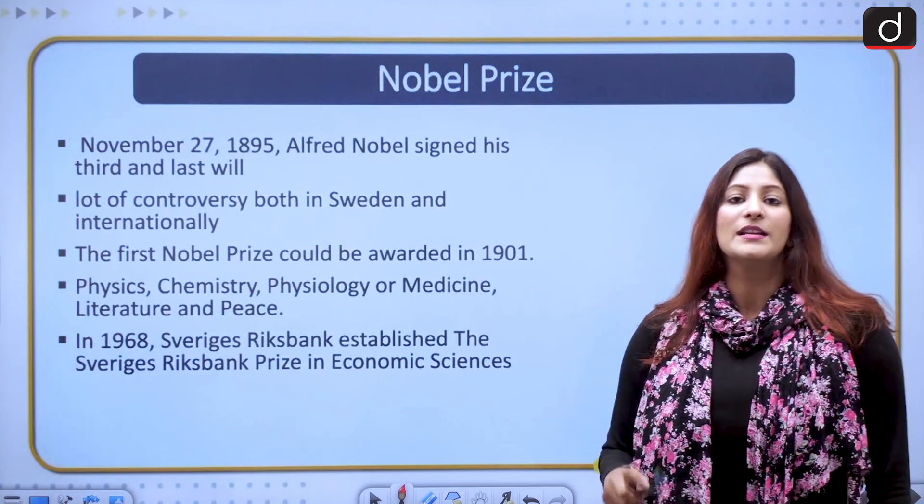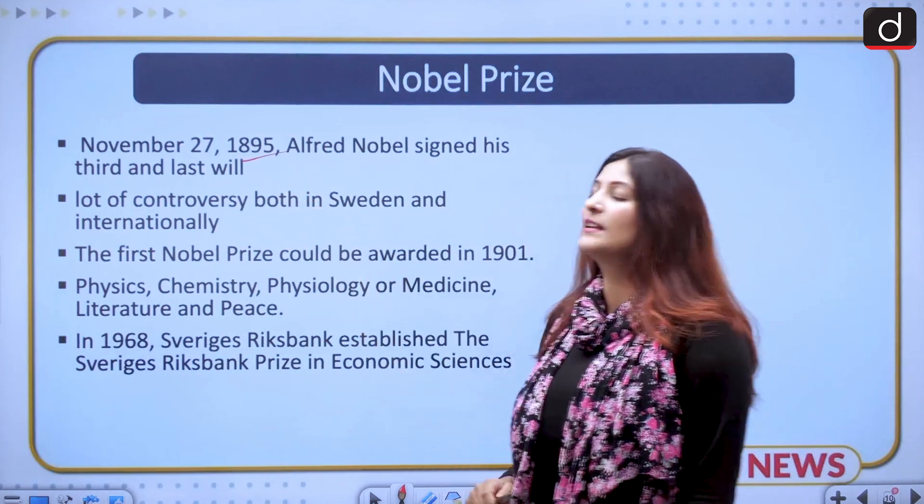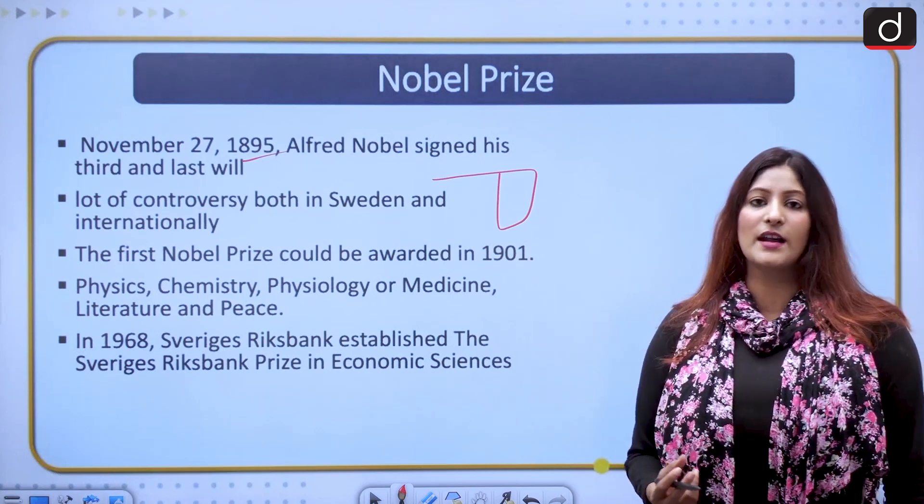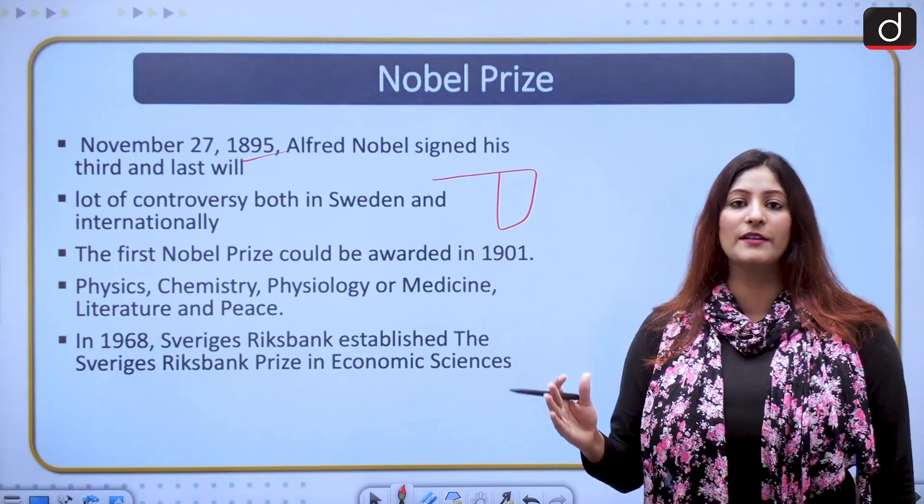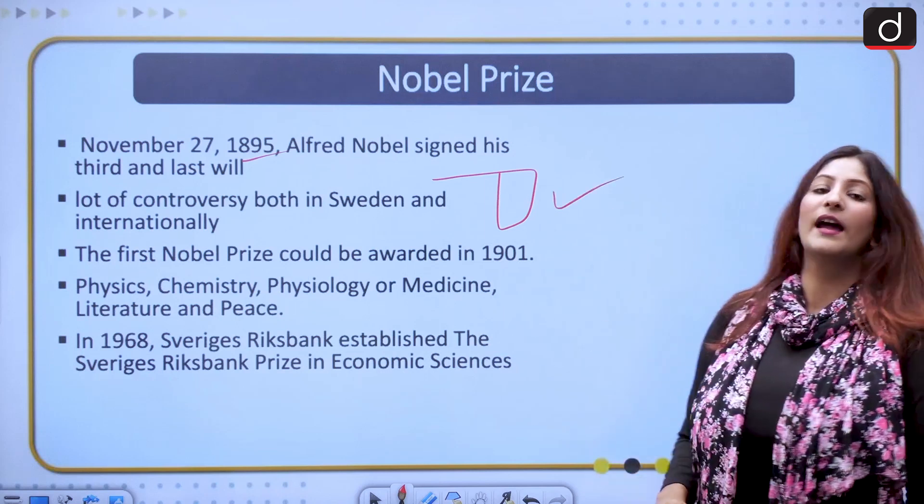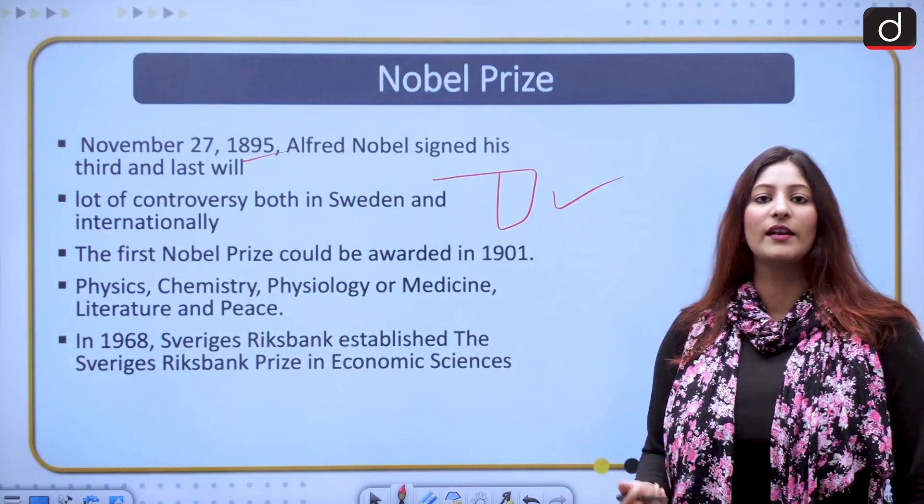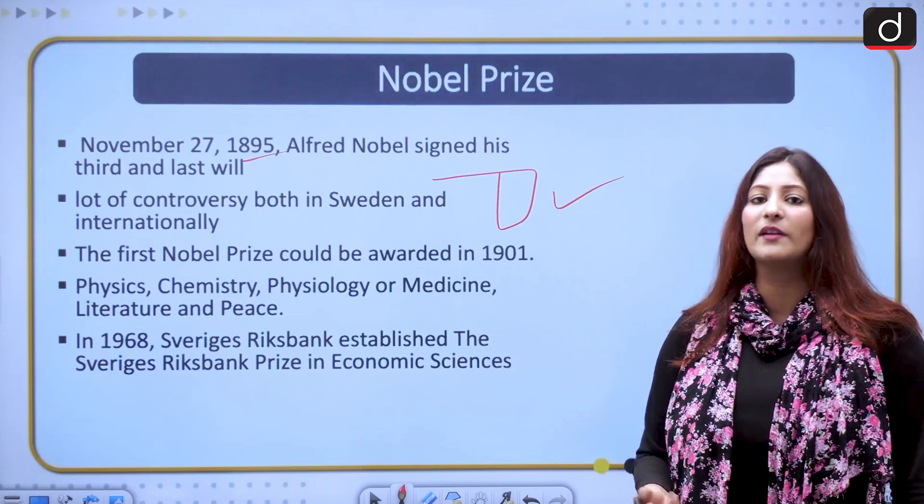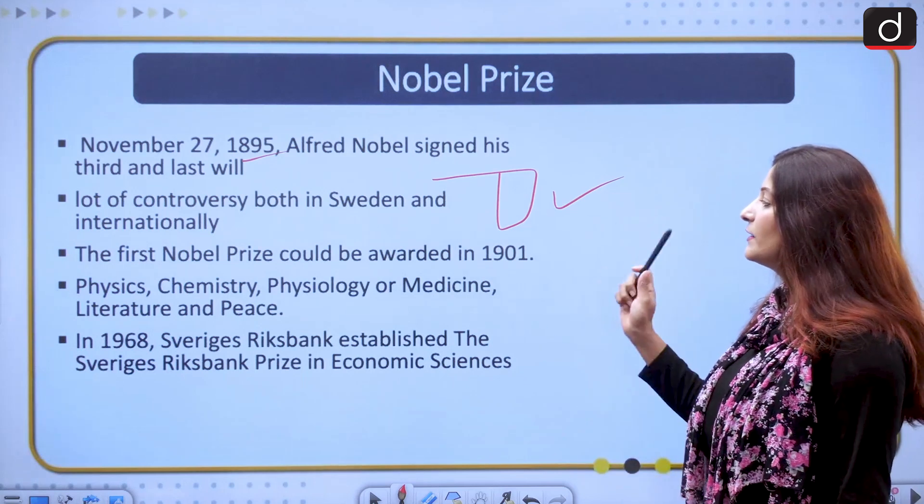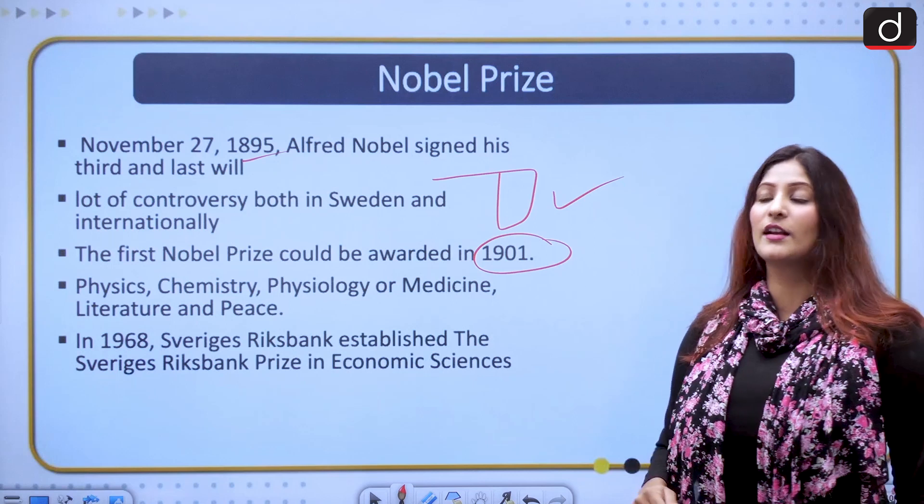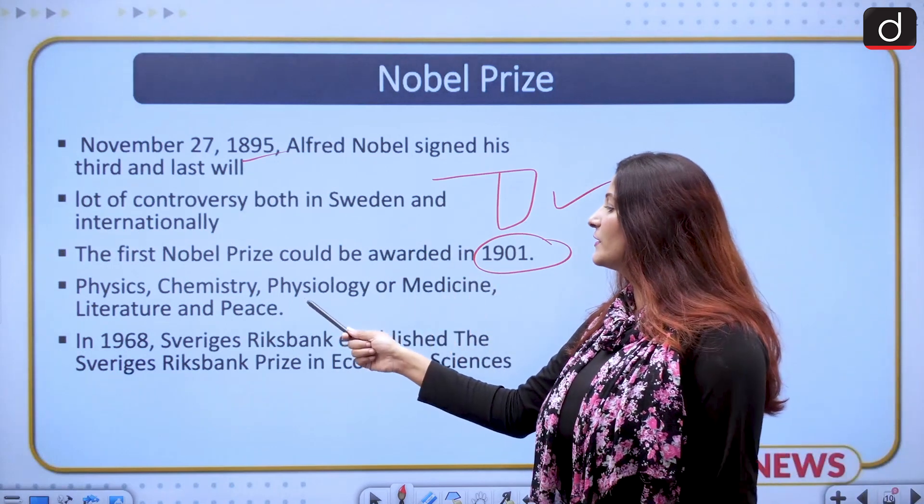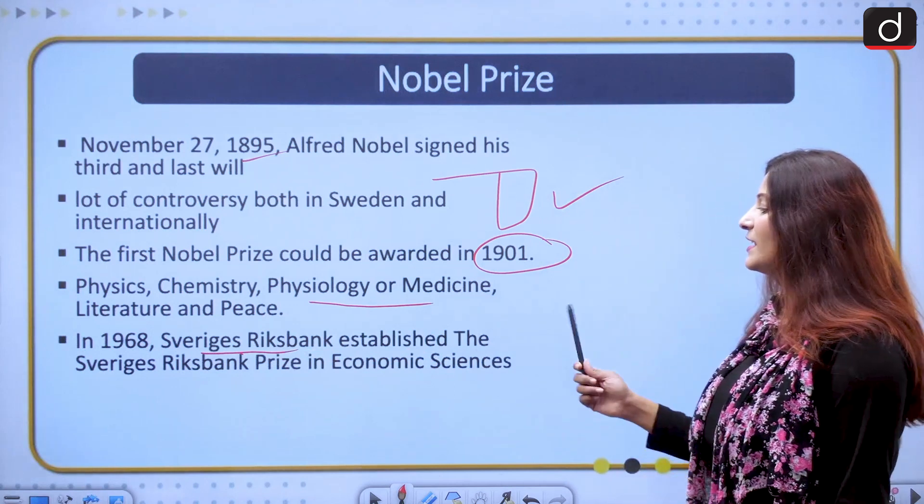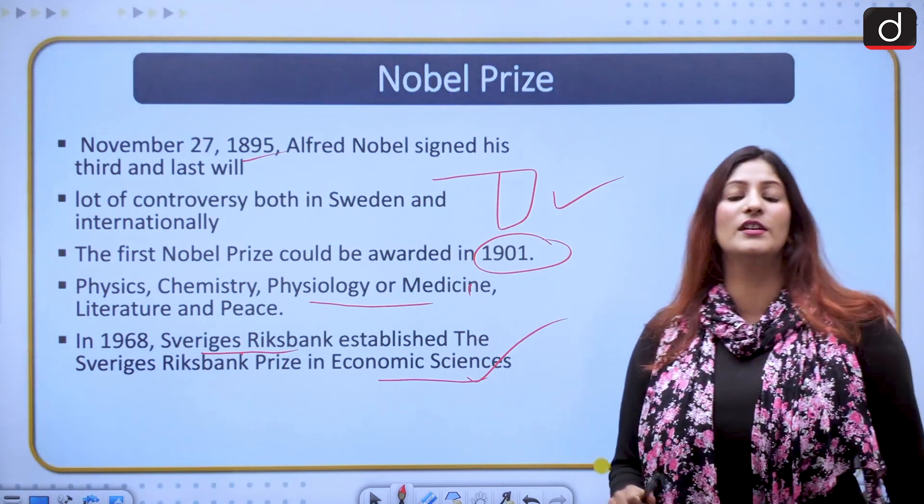He signed his third and last will on November 27, 1895, saying that a pool of funds of whatever he has earned will be created after his death and prizes will be distributed in different fields from this pool. It created a lot of controversy not only in Sweden but also everywhere else. His family was not happy with everything the will said and the executives he chose to execute his plan were also not happy. After his death, the first Nobel could be awarded only in 1901 in different fields he talked about.